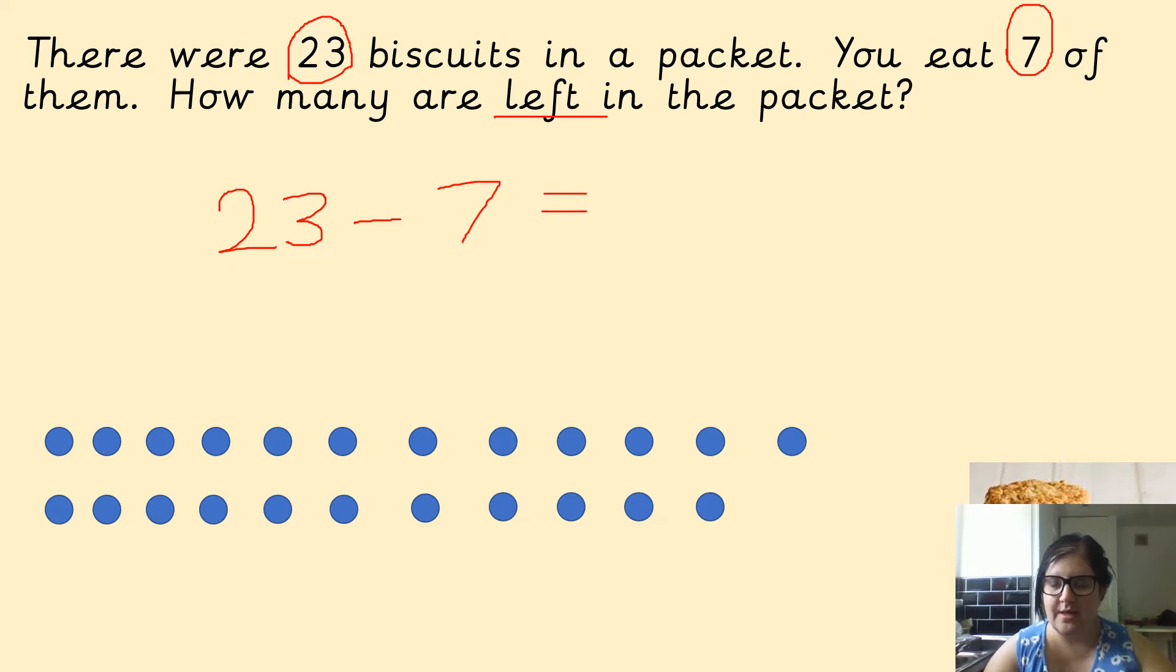So I've got 23 down here. If you are drawing circles, you need to count them. I've already counted mine, but you need to count them after you've drawn them. So if I'm crossing off 7, 1, 2, 3, 4, 5, 6, 7.